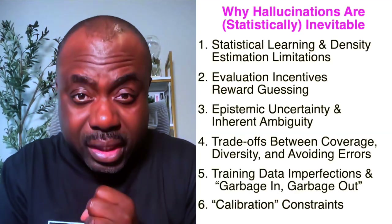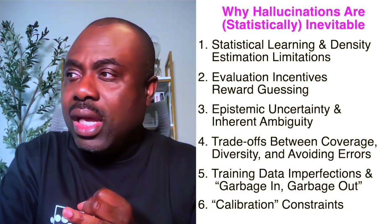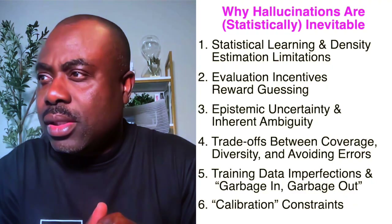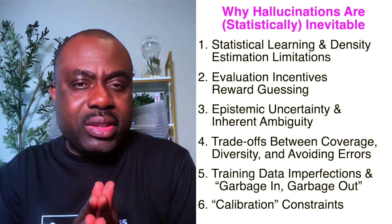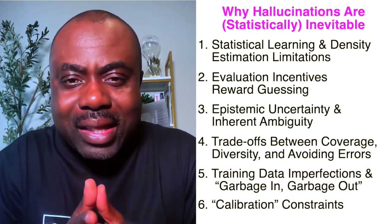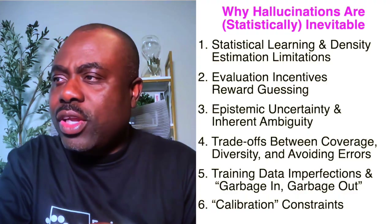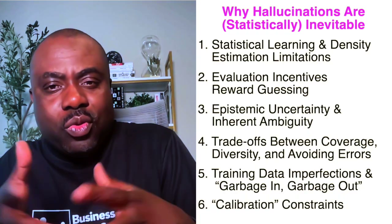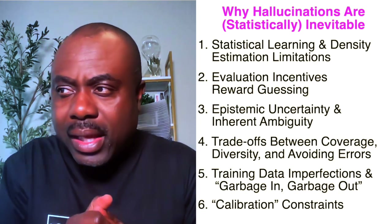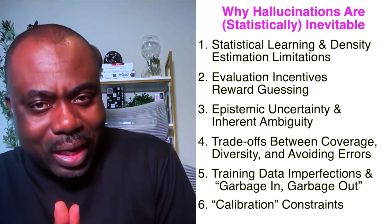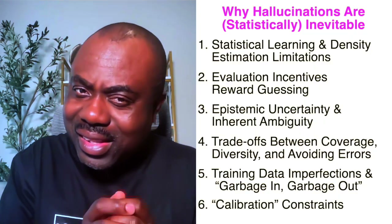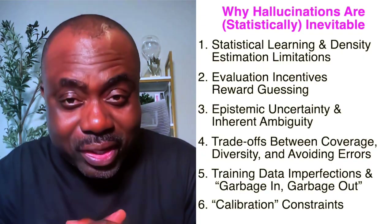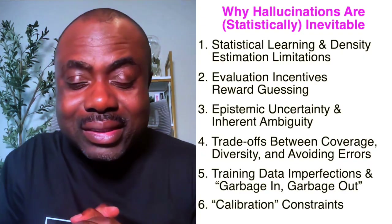So today I've discussed the reality of hallucination, what it is, how we can minimize it, and the recent publication from OpenAI which says hallucination is truly inevitable in practice. The five reasons are: number one, statistical learning and density estimation limitations; number two, evaluation incentives and how rewards are allocated; number three, epistemic uncertainty and inherent ambiguity in training data; number four, the trade-off between coverage, diversity, and errors; and number five, training data imperfections — garbage in, garbage out. There is also a sixth: calibration constraints.